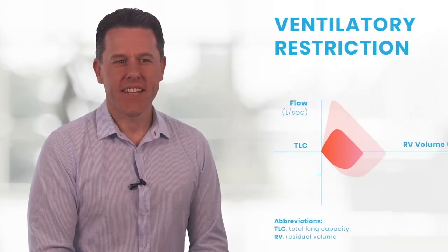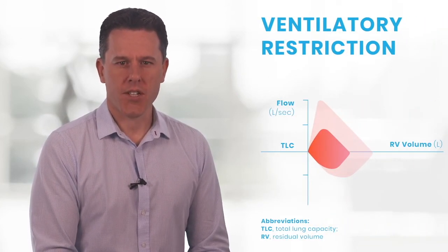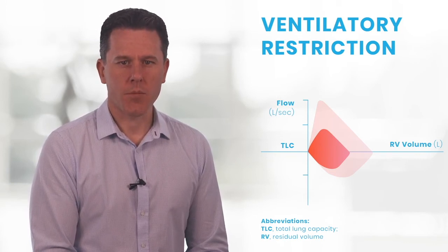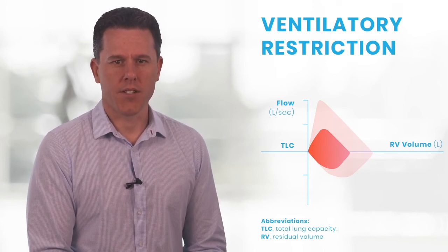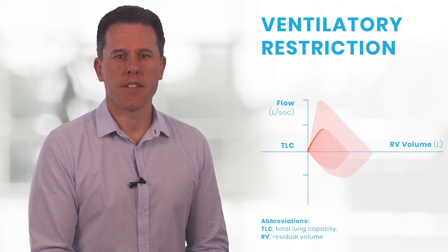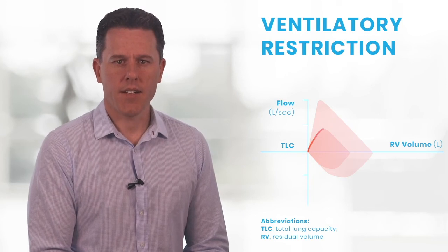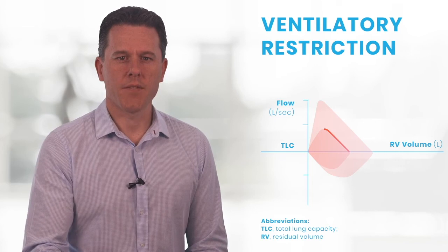The next graph is an example of what happens during ventilatory restriction. In this graph, the flow-volume loop looks a lot smaller, and the reason for that is because the forced vital capacity is reduced. So the expiratory flow is maintained, is just as fast, however the expiration finishes early because the forced vital capacity is reduced.